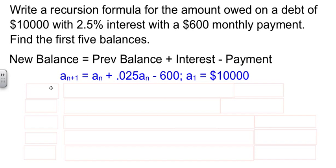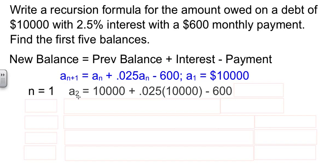That's our recursion formula, now let's go to work and find how much we owe. So, when n is 1, that's going to get us a₂, a₁ is $10,000, plus .025 times 10,000, minus the 600, and my calculator gave me an answer of 9650.